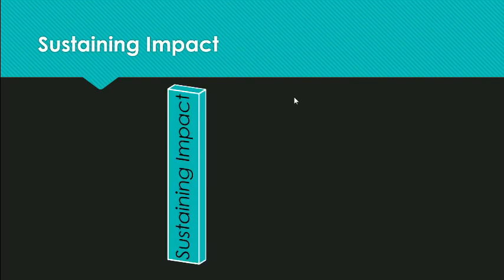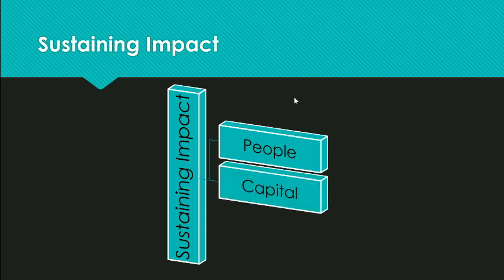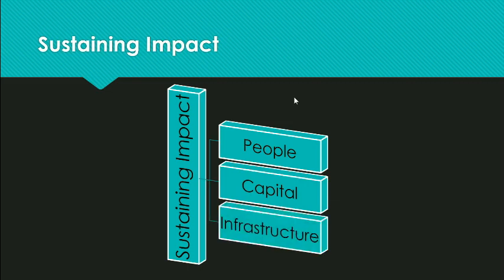Now that you know the six principles that make organizations high-impact, how do you sustain success? Crutchfield and Grant recognize three critical elements needed to maintain and deepen impact over time. People: develop a people strategy and invest heavily in top performers. Capital: find the right resources for funding. Infrastructure: invest in overhead despite the pressure to always look lean.